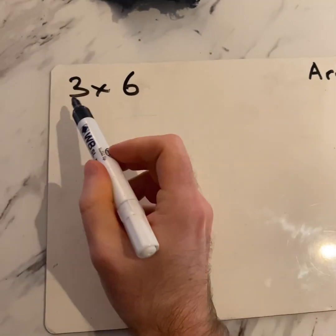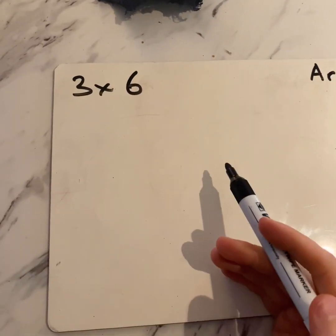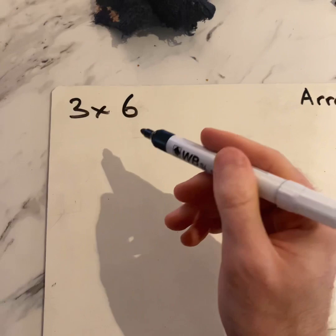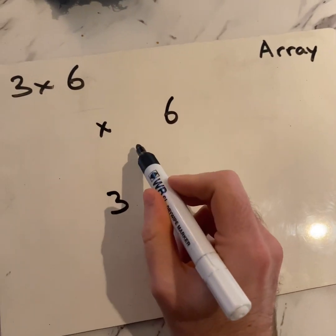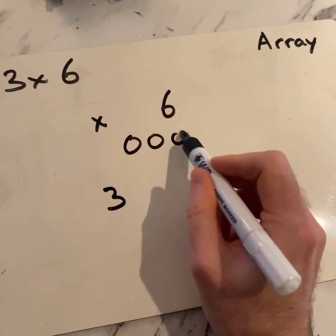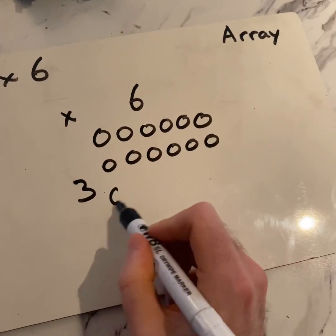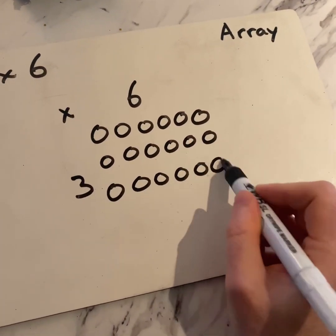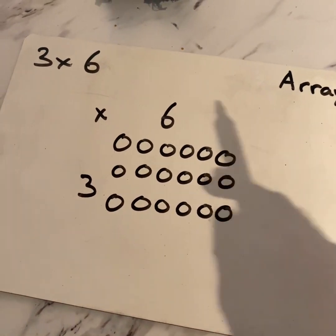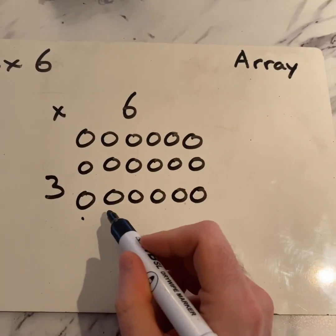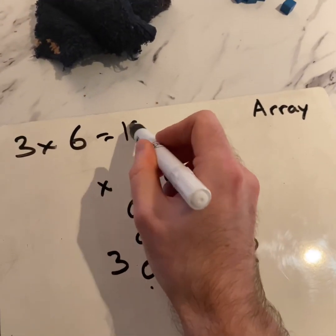I'll do one more. I've got three times six. Remember, how else could we look at that problem? Three groups of six. I draw in one group of six, two groups of six, three groups of six. Now to find the answer I could count them individually, or if I'm getting good at counting in threes, I can try that: three, six, nine, twelve, fifteen, eighteen. Three times six is eighteen.